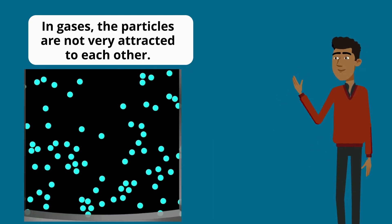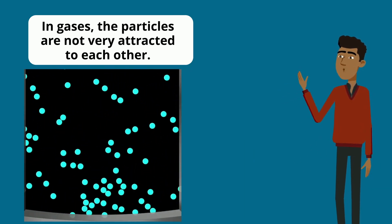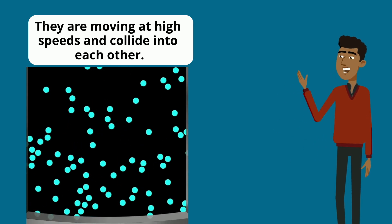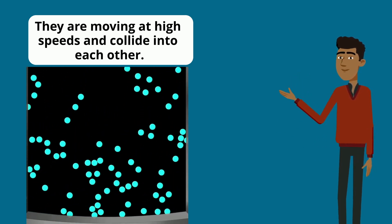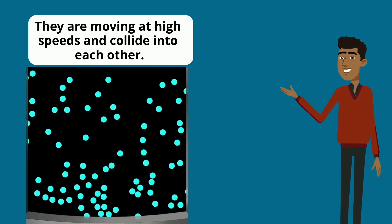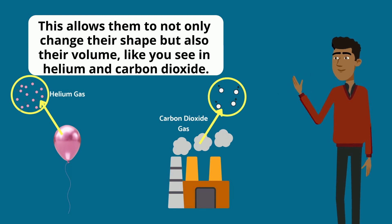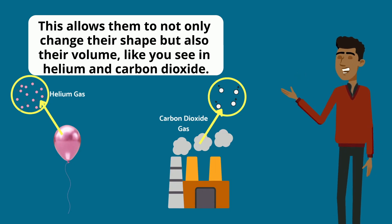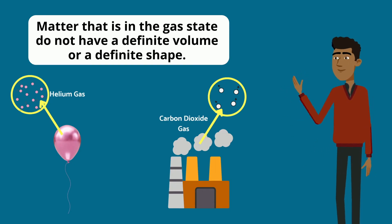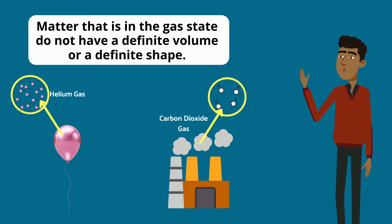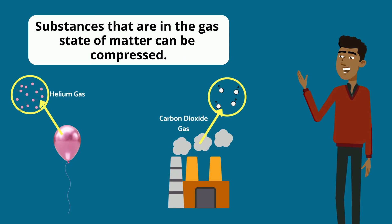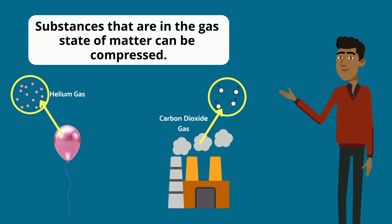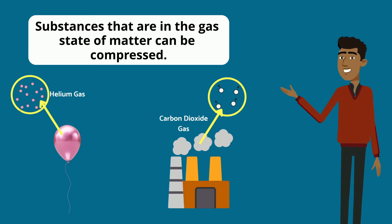In gases, the particles are not very attracted to each other. They are moving at high speeds and collide into each other. This allows them to not only change their shape but also their volume, like you see in helium and carbon dioxide. Matter in the gas state does not have a definite volume or a definite shape. Substances in the gas state of matter can be compressed.